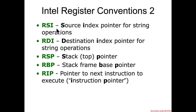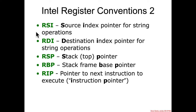RSI is the source index pointer for string operations — we'll see towards the end of the class a looping string operation where RSI will have a special usage. RDI is the destination index, so source to destination. But again, those are just naming conventions and recommendations — any register can be used as a general purpose register if the compiler wants.